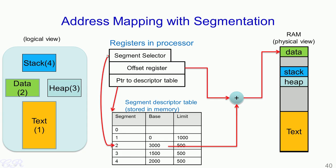The segment selector is an offset into the descriptor table. The memory management unit in the processor would look up this particular offset and pick the base value 3000. This base value is then added with the contents of the offset register to get what is known as the effective address. This effective address will correspond to some address in the RAM.